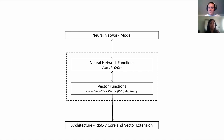The second option is more suitable for our project. The vector extension already exists and has been through multiple iterations. Machine learning is known to be an application that can be optimized using vector extensions, so there is little to be gained by starting from scratch. By picking only the necessary instructions from the vector extension, the complexity of the accelerator can be reduced and we can also have performance improvements. This is the approach taken in this project.